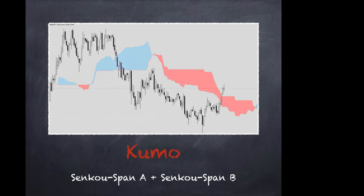Then we have the Y wave: higher highs and lower lows - an expanding triangle. No one likes it when the market behaves like this because you don't know where it's going. It's going up, then down, then higher up, then lower low. It's taking out all the stop losses, trading in a range but actually getting out of the range all the time. It's a very difficult market at this point. Hosoda called it the Y wave because it has the shape of a Y.